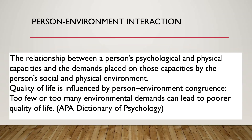The American Psychological Association Dictionary of Psychology defines person-environment interaction as a relationship between the person's psychological and physical capacities and the demands placed on those capacities by their social and physical environment. Quality of life is influenced by person-environment congruence — meaning how well they fit together. The better the fit between the person and their environment, the better their quality of life. An environment that puts too few demands — making life boring — or one that overwhelms with too many demands, can both lead to a poorer quality of life.